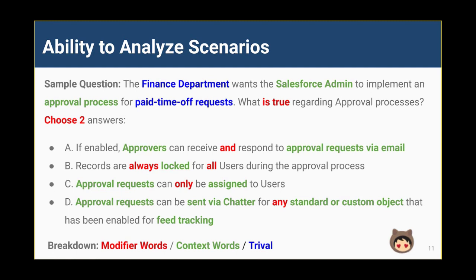Moving on to context words — these are in green. Scanning the question tells us that the overall focus is approval processes and that we're approaching the analysis from the point of view of a system administrator. Scanning the answers reveals that we need to pick out true statements related to methods for requesting approval (answers A and D), assignment of approvers (answer C), and record locking within the approval process (answer B). This helps us further focus our thought processes.